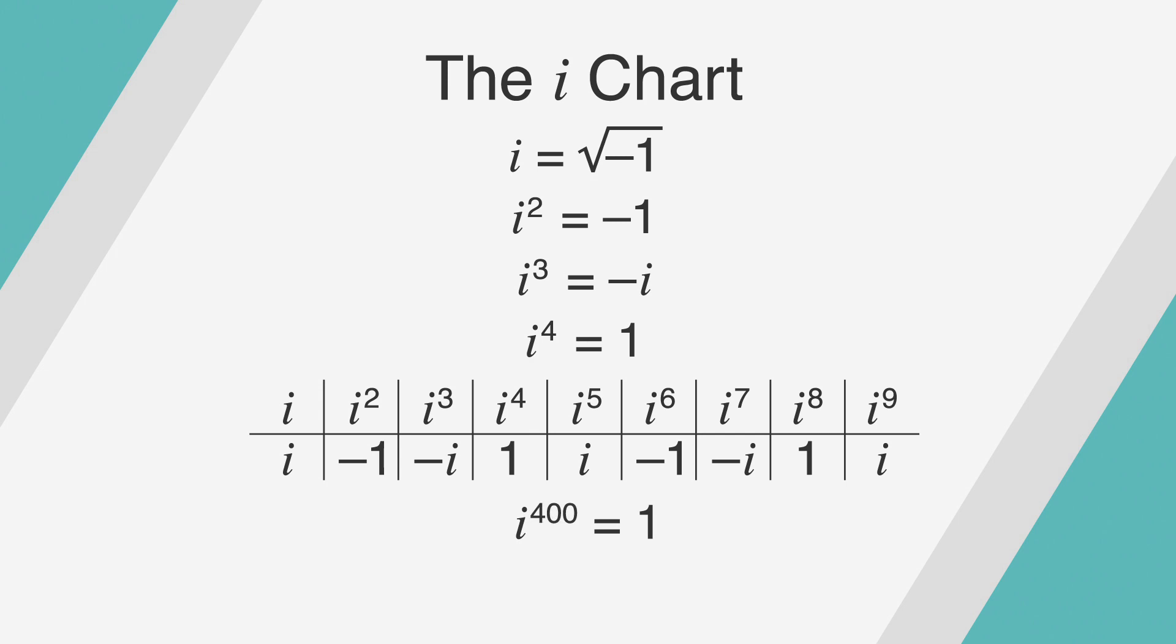And i to an even exponent that isn't a multiple of 4 will be equal to negative 1. So i to the 10 will equal negative 1, as will i to the 14 and i to the 26.